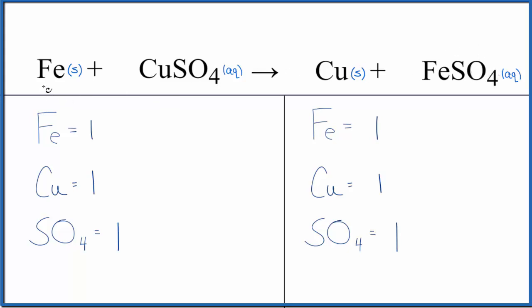The type of reaction here, the iron is replacing the copper. It's pushing the copper out of the solution. So now we have solid copper. It falls to the bottom of the test tube.